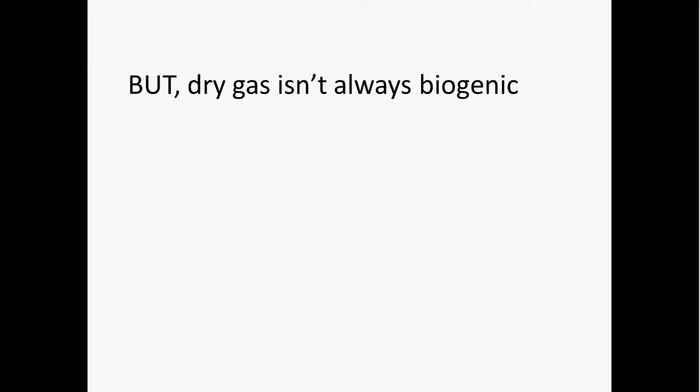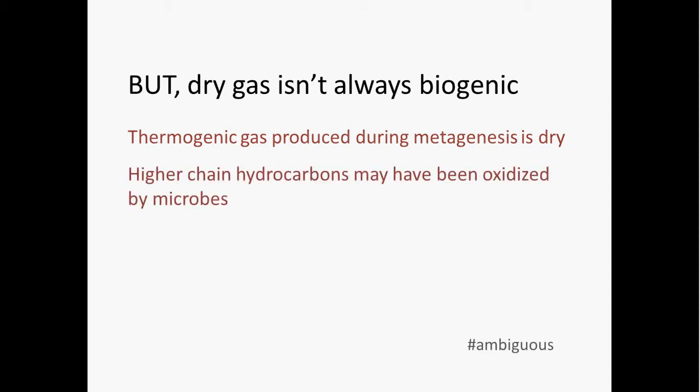Dry gas is not always biogenic. This is a little bit ambiguous. There are at least two instances where thermogenic gas would have a high wetness value. It could be that the gas formed during metagenesis, in which case it's dry gas that's being produced by thermal processes. And so if this is the case, you would expect to find that the source associated with that dry gas is very thermally mature. Let's say RO value is greater than about two. And so if you didn't have that mature source, then it could be that the gas is biogenic. On the other hand, it could also be that the gas formed during catagenesis, but that the higher chain hydrocarbons were oxidized by microbes. We talked about oxidation of oil leading to formation of heavy oil. So it seems microbes can also oxidize the hydrocarbons making up natural gas as well. And this could result in gas that has a higher wetness value. So there's a little bit of ambiguity there.